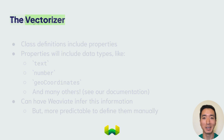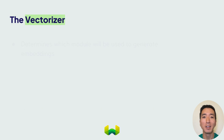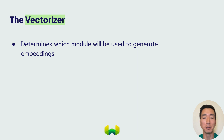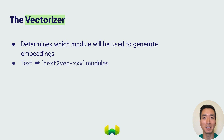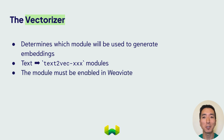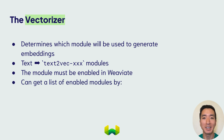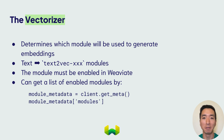Next is the vectorizer. This is a very important setting. The vectorizer determines which VV8 module will be used to generate vector embeddings for your class. For text objects, you'd usually select one of the text-to-vec modules, such as one for an inference API like Cohere, HuggingFace, OpenAI, or Palm. The module that you select has to be enabled in your VV8 instance. You can get a list of enabled modules for your VV8 instance like so, to find out which modules are available and select one of them. Remember that WCS instances come preconfigured, so you don't need to manually enable them at your end.